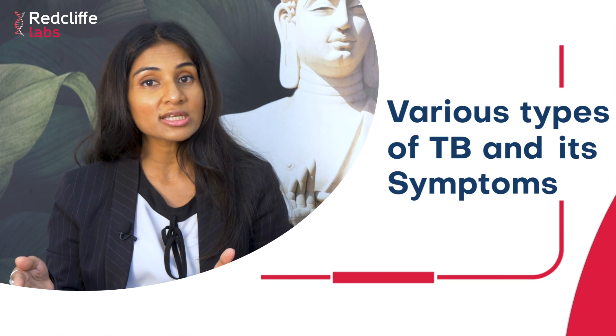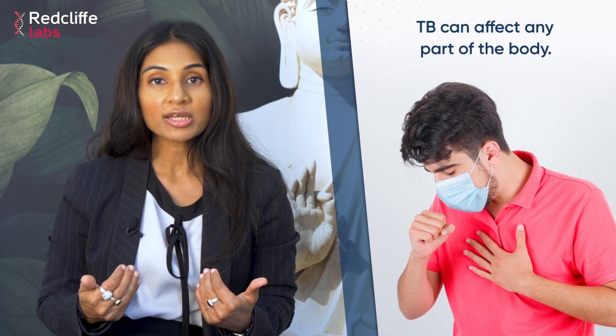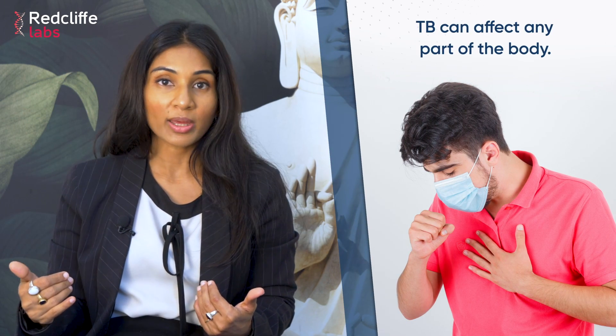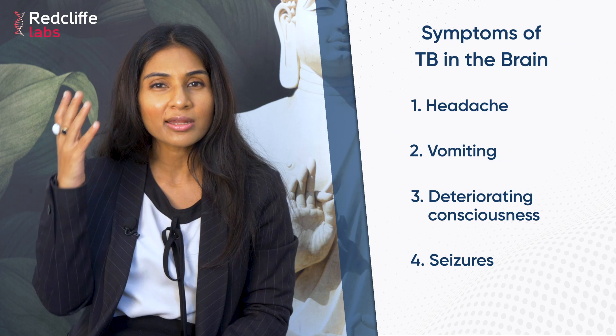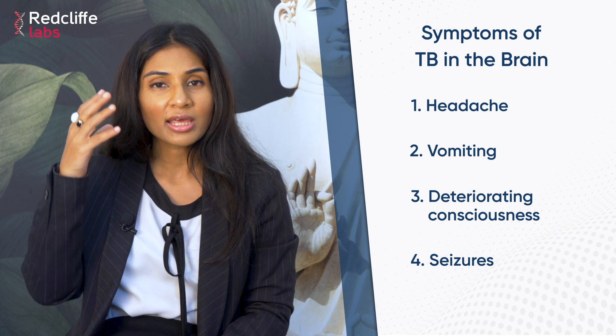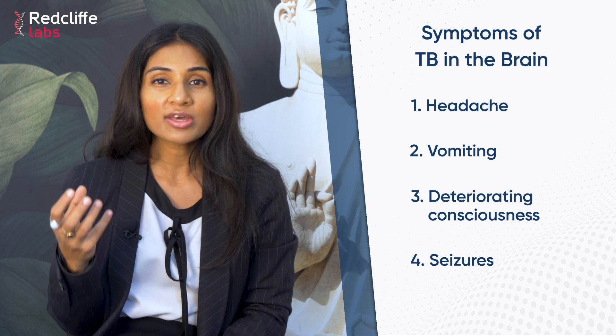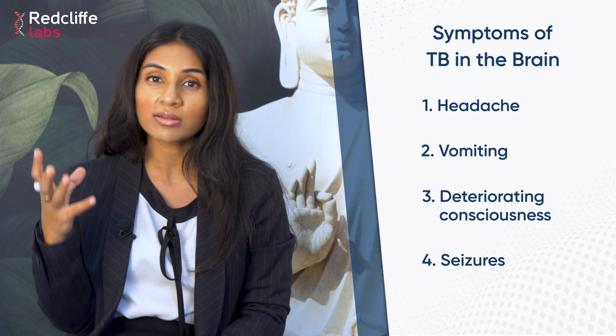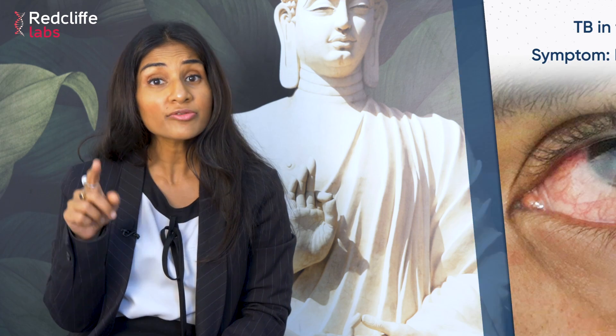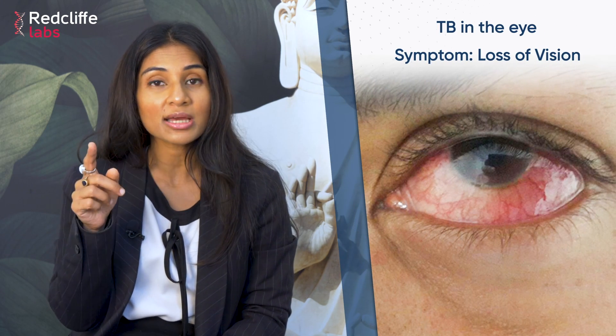What are the various manifestations of tuberculosis? It is commonly thought that TB affects only the lungs, but it can affect any part of the body. We can get TB in the brain, where a person can have symptoms like headache, vomiting, deterioration in consciousness, and seizures.